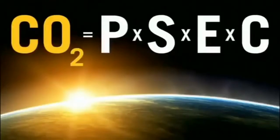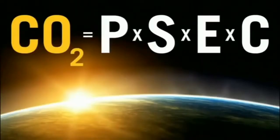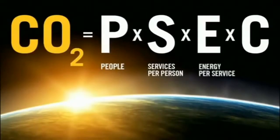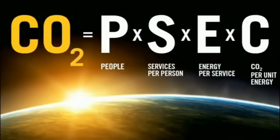This equation has four factors, a little bit of multiplication. You've got a thing on the left, CO2, that you want to get to zero. And that's going to be based on the number of people, the services each person's using on average, the energy on average for each service, and the CO2 being put out per unit of energy.